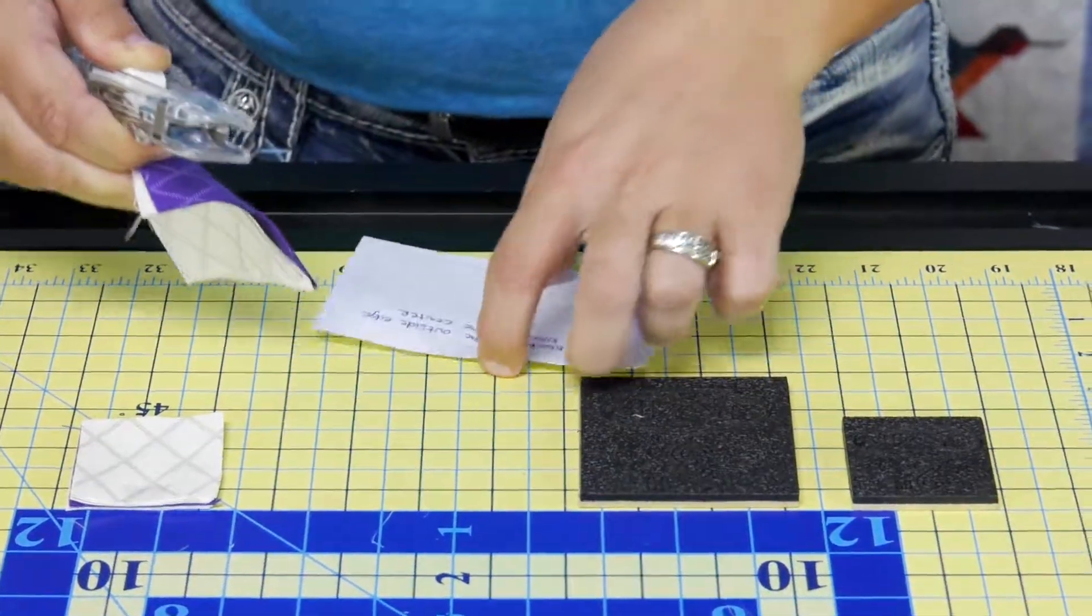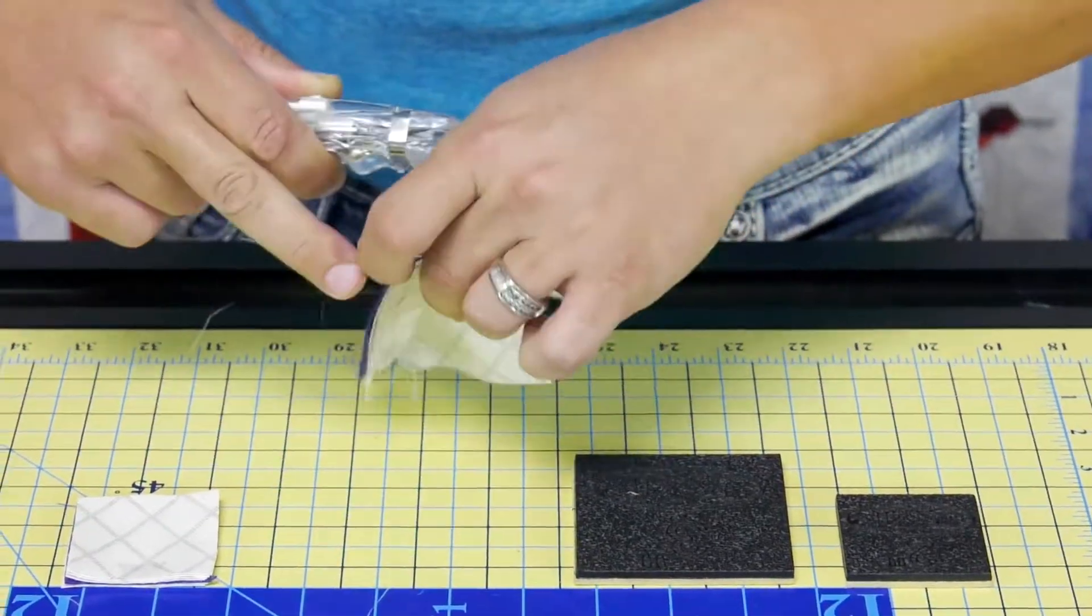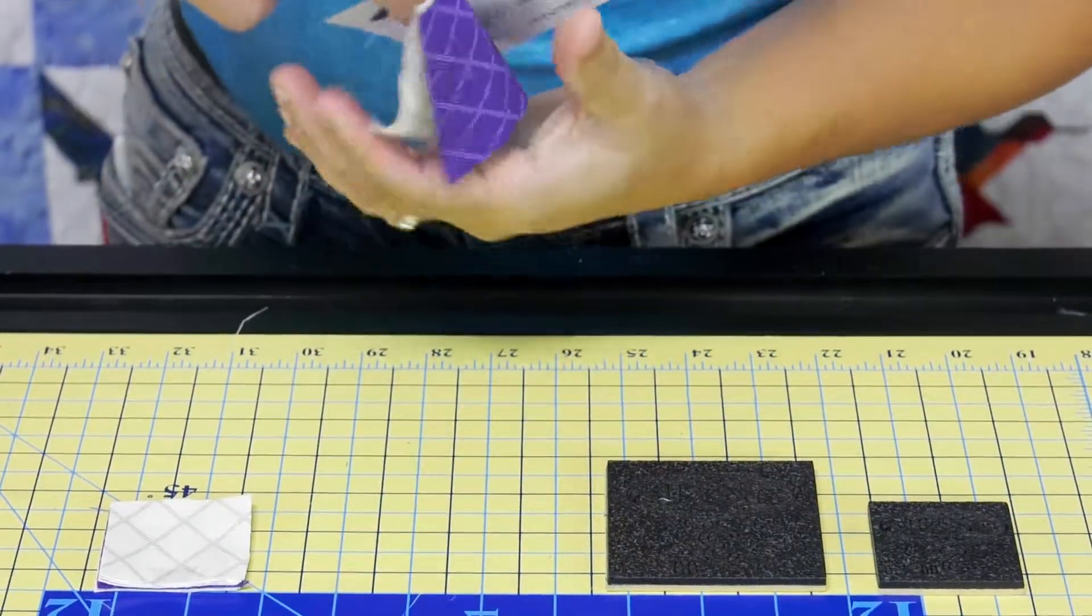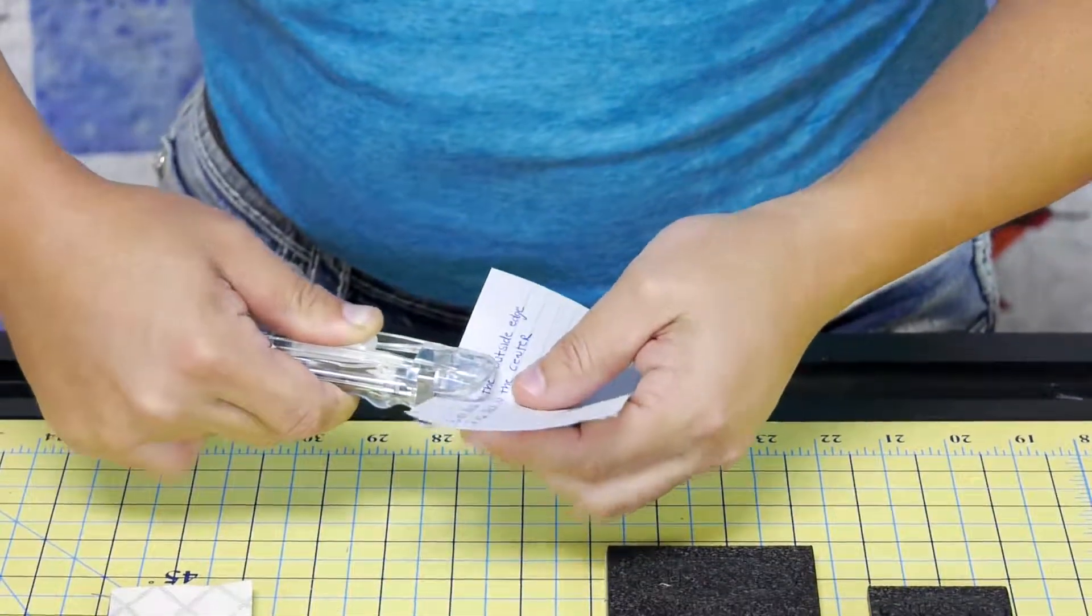So I simply take the fabric, then I take the instructions of where this goes, I hold them together, and then I easily clip it on, just like this.